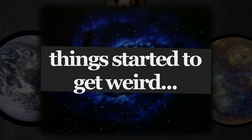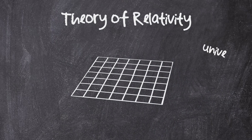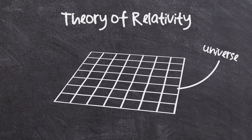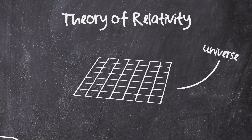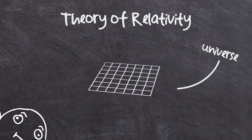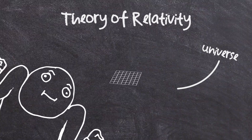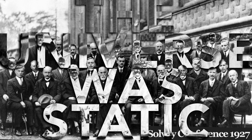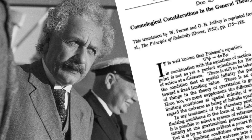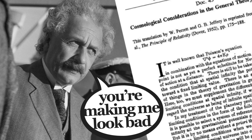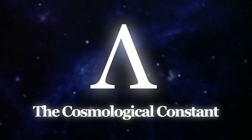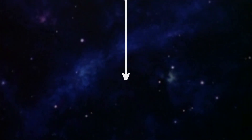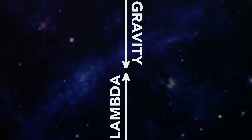And this is where things started to get weird, because his theory painted a universe that was either expanding or contracting. But in 1915, it was widely accepted that the universe was actually static. Einstein didn't like his theory telling otherwise — he needed it to abide by the common thought at the time. He needed a new element in his equations, so he added lambda, the cosmological constant.